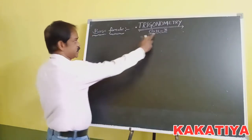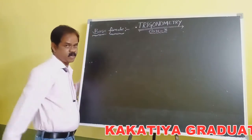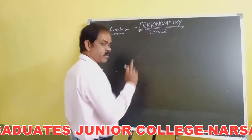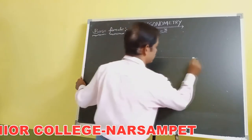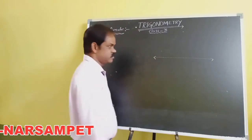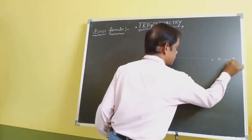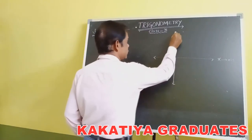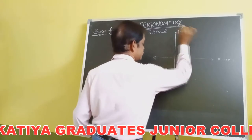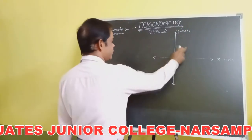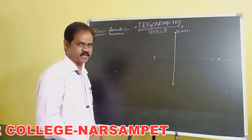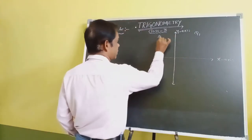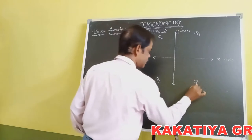Today we are going to discuss trigonometry basic formulas. Let us consider our block code as a base. We are going to draw two lines. First of all, draw the horizontal line — the x-axis — and draw the vertical line — the y-axis. The plane can be divided into four coordinates: first, second, third, and fourth coordinate.